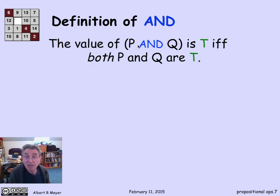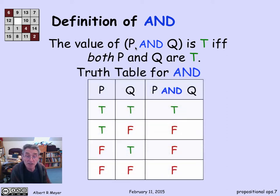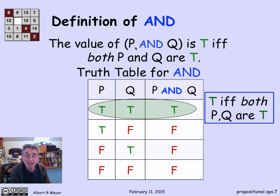There's another connective AND which works even more straightforwardly. The value of P and Q is true if and only if both P and Q are true. And there's this truth table. The salient row is that it's true only if and only if both P and Q are true.